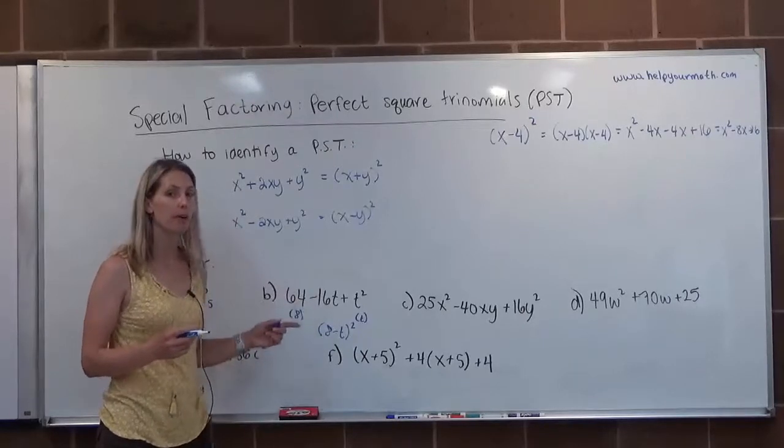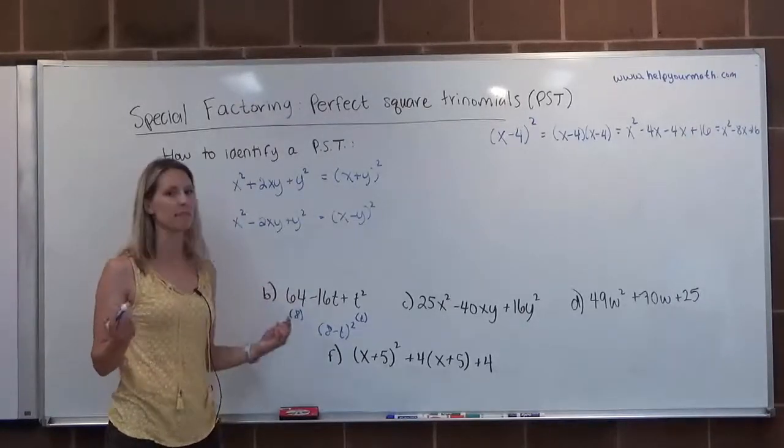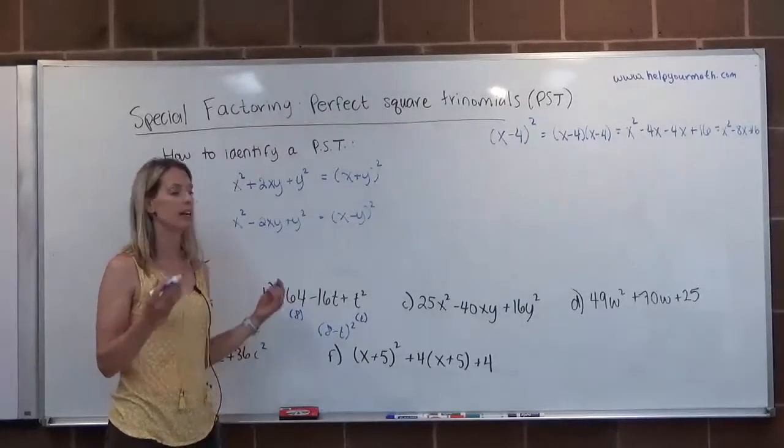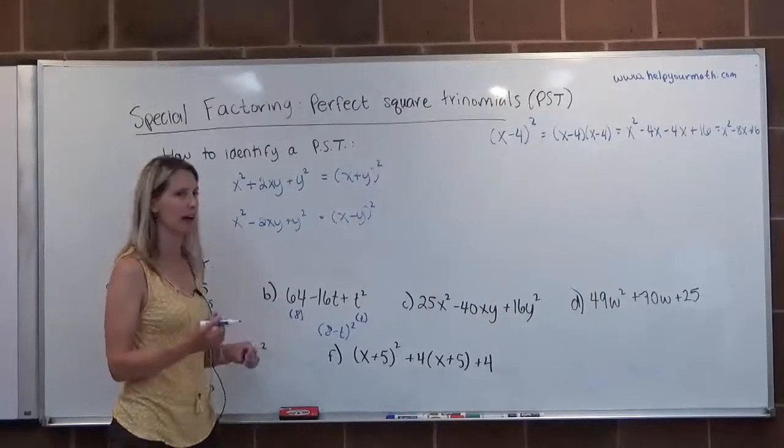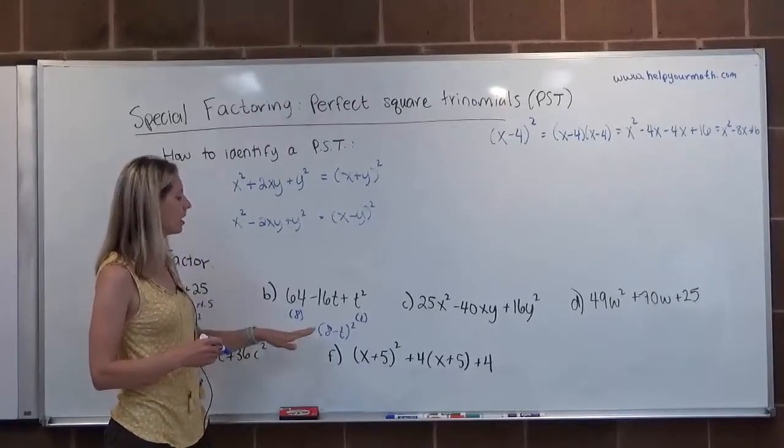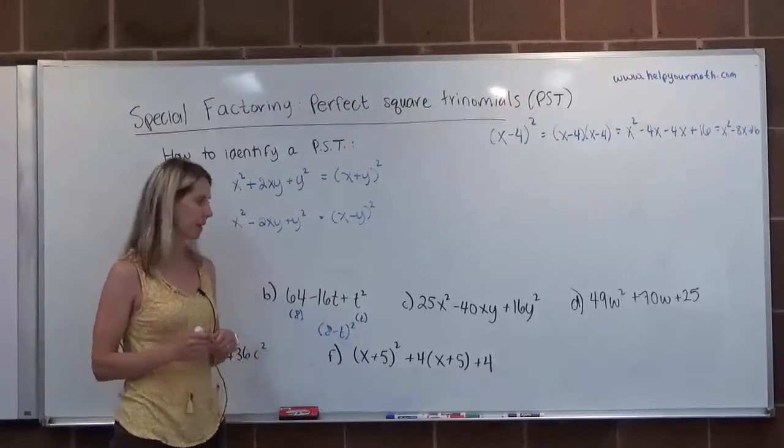And interestingly, if you did flip it around and put the T squared first, the T minus 8 quantity squared is actually going to give you the same value. So kind of interesting how that works out. Very rare subtraction thing that pans out. So if you put T minus 8 quantity squared, that's fine too.